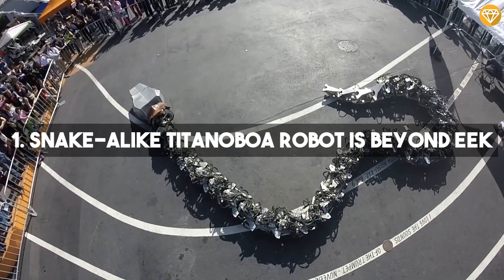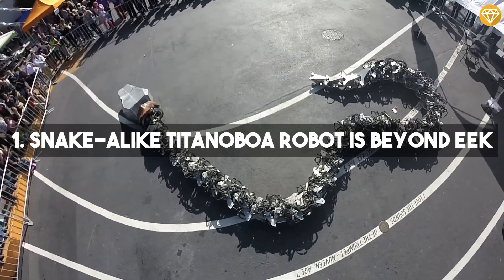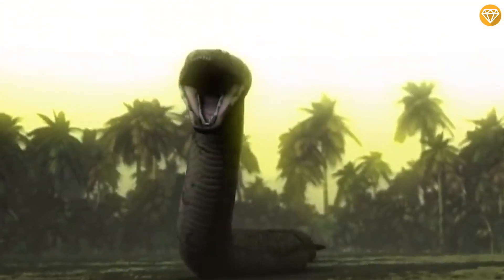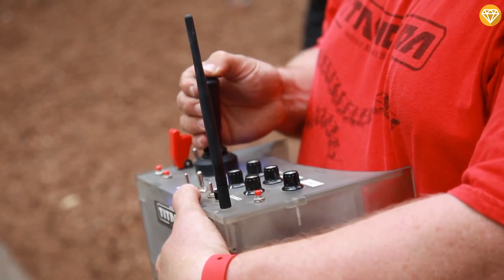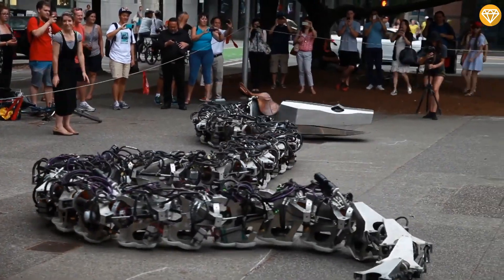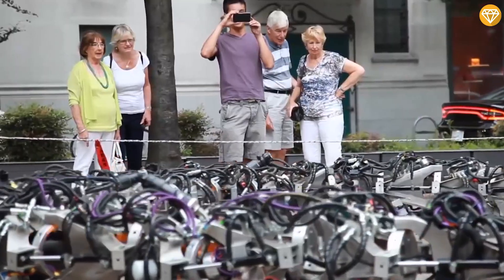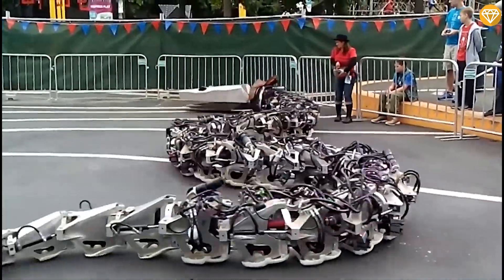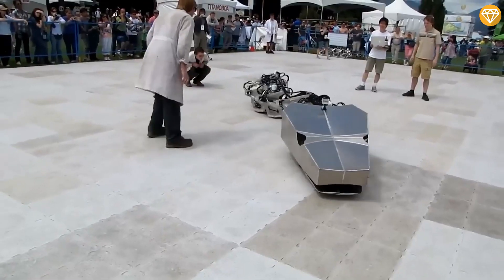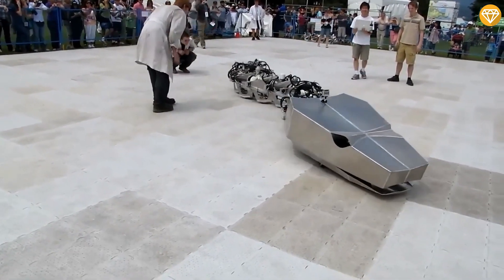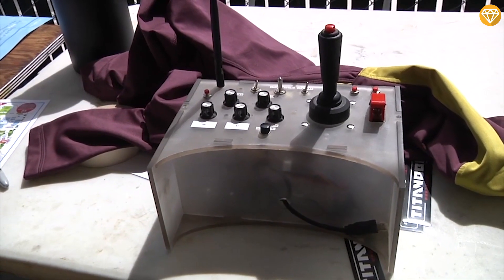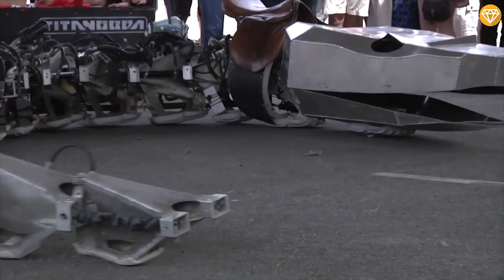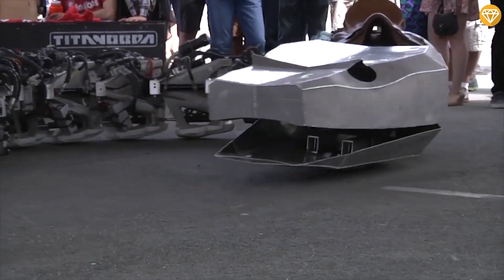Number 1, Snake-like Titanboa Robot Is Beyond Eek. The Titanboa robot, inspired by the ancient gigantic snake of the same name, leaves us in awe. This snake-like marvel showcases remarkable advancements in robotics and bioengineering. Measuring several meters in length, the Titanboa robot replicates the slithering movements and scales of its prehistoric ancestor with astonishing accuracy. Equipped with an intricate system of sensors and actuators, this mechanical serpent exhibits an unparalleled level of flexibility and locomotion. It effortlessly navigates various terrains, both on land and in water.